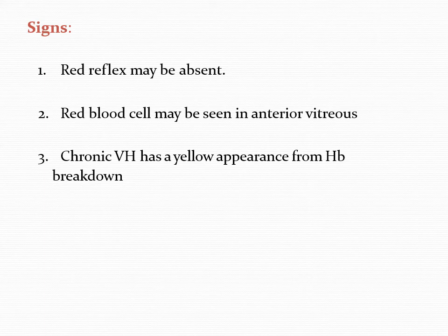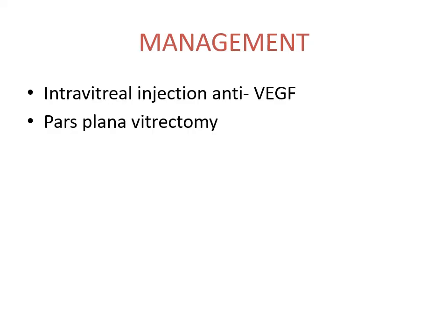The signs of vitreous hemorrhage include: firstly, the red reflex may be absent — the red reflex coming from the fundus is masked by the vitreous hemorrhage if it is large and diffuse. Secondly, red blood cells may be seen in the anterior vitreous. Lastly, chronic vitreous hemorrhage has a yellowish appearance due to hemoglobin breakdown.